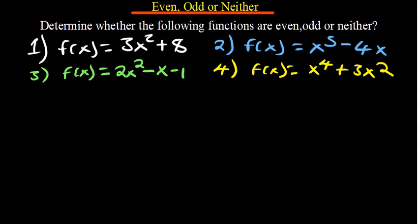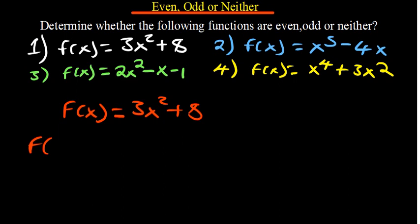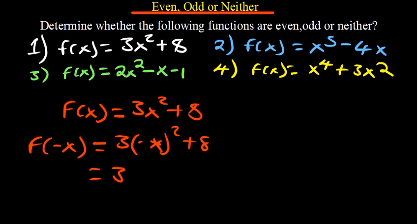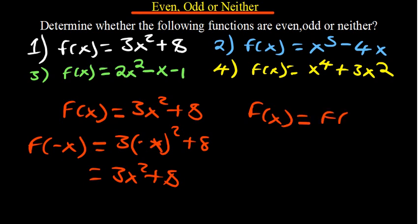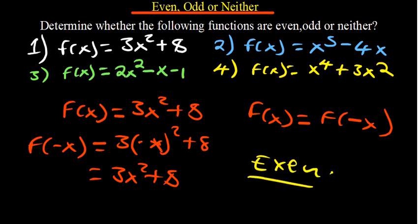Question one: determine whether f(x) = 3x² + 8 is even, odd, or neither. We start by finding f(-x): plug in -x where there is x, so f(-x) = 3(-x)² + 8 = 3x² + 8. Nothing has changed. Since f(x) = f(-x), the function is even.